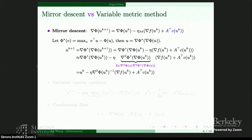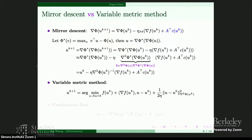We obtain an approximated formula of mirror descent which is nothing but the variable metric method, where the metric is induced by the Hessian of phi. In other words, originally you want to minimize f, and in practice you find a quadratic approximation of f. If you choose phi = u^2/2, this reduces to gradient descent; if you choose phi = f, this is Newton's method. So mirror descent and the variable metric method are just first-order approximations of each other.